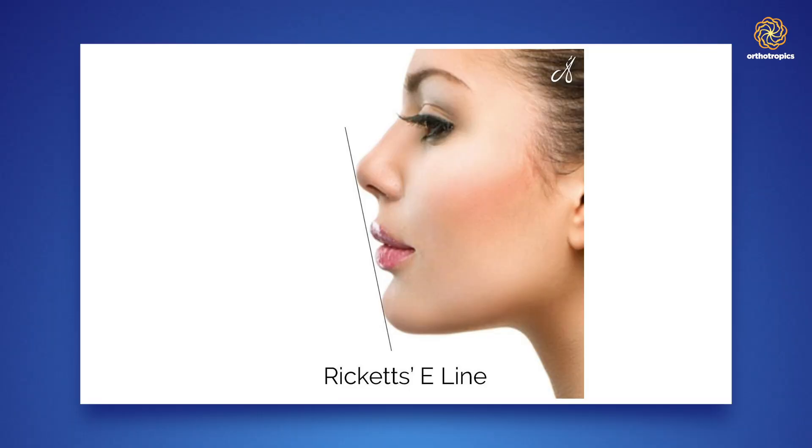Robert Ricketts uses the aesthetic line, which comes down like this and measures the relative position of the lips and nose. But I don't think that's very satisfactory either, because the chin can be either taken forward or may drop back, and that renders this particular measure less valuable.